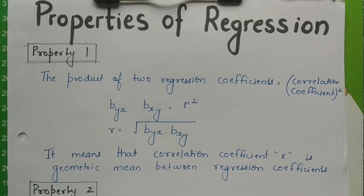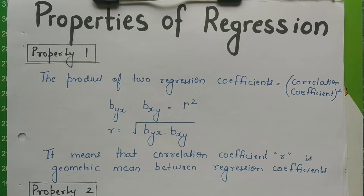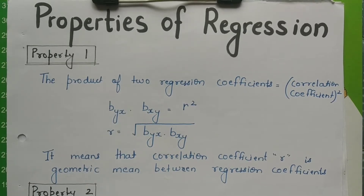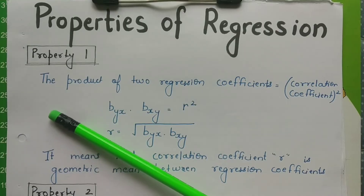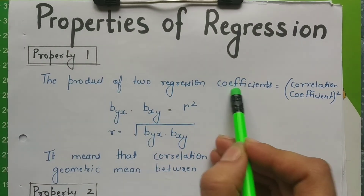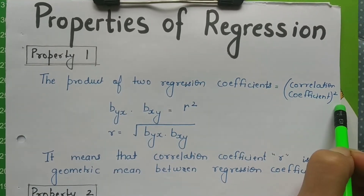If you study these properties properly, then you will understand the chapter very well. And if you have not seen my previous 6 videos, then do watch them for a complete understanding of the regression unit. So let's start with property number 1: the product of two regression coefficients is equal to the square of the correlation coefficient.